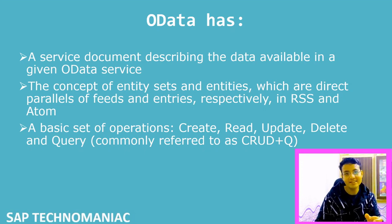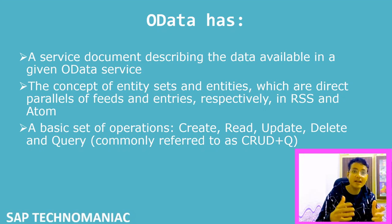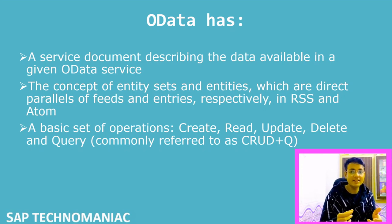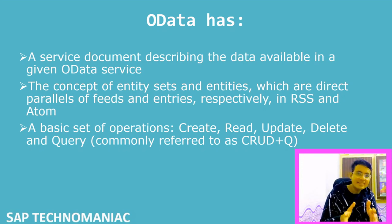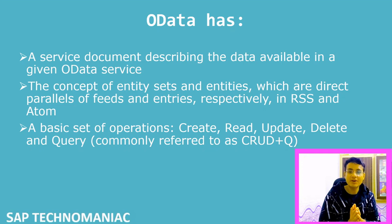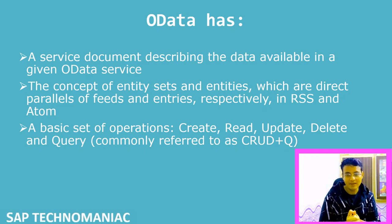Just like ATOM and RSS, we have feeds and entries. In the same way, in OData we have entity sets and entities. Whatever operations we can do in ATOM — create, read, update, delete, and query options — we can also do in OData. Now we will look at our first service document of Northwind, which is a very popular OData service, and we will try to understand the basics of OData.